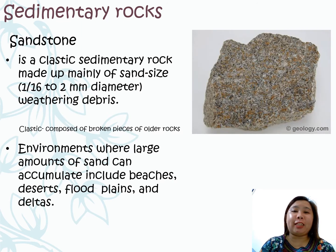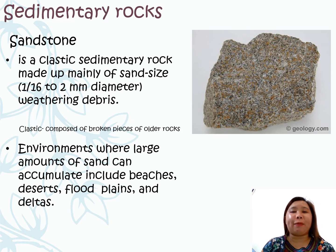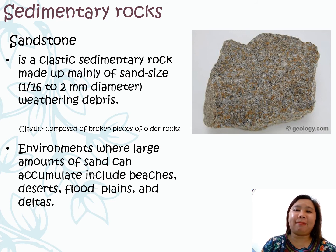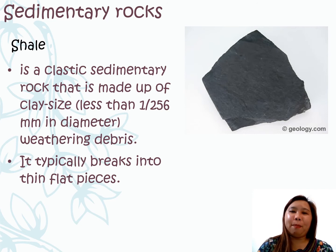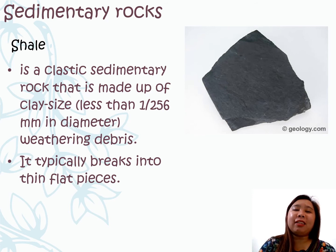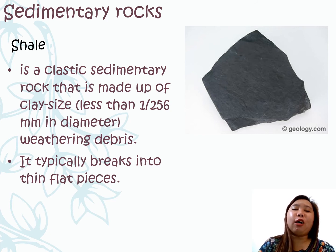Another example of sedimentary rock is the sandstone. It is made up mainly of sand-sized weathering debris. It is clastic, meaning it is composed of broken pieces of older rocks, and is commonly found in environments where large amounts of sand can accumulate, including beaches, deserts, floodplains, and deltas. My last example of sedimentary rock is the shale. It is a clastic sedimentary rock that is made up mainly of clay-sized weathering debris, and this kind of rock typically breaks into thin flat sheets.